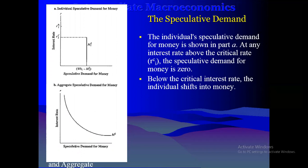To clarify: whenever there is an increase in the interest rate above the critical rate, the interest rate is very high, so everyone goes and buys bonds — holding bonds means holding less money. When the interest rate is high above the critical rate, we will not hold any money at all; the speculative demand for money will be zero. So there is an inverse relationship between a high interest rate and the speculative demand for money.